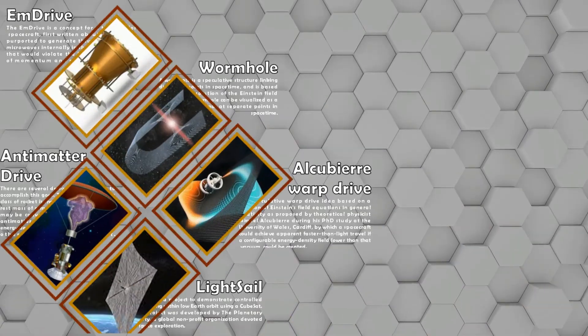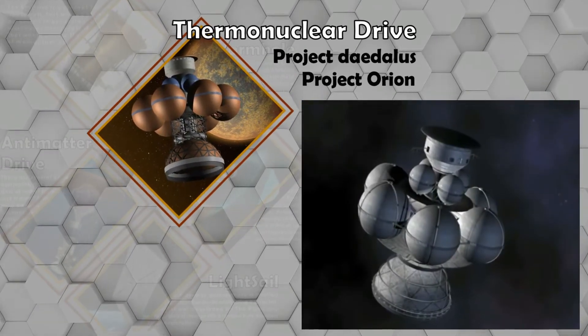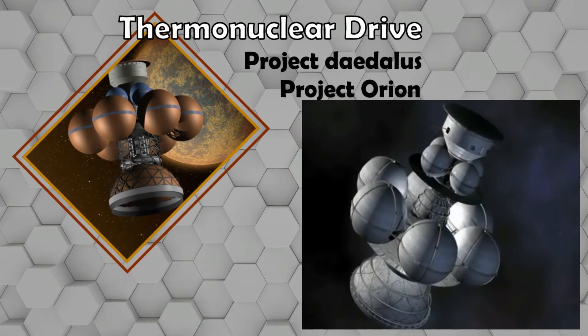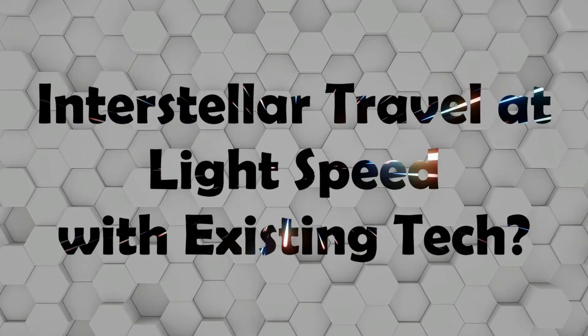So we have discussed lot of ways to get to stars. And thermonuclear drive is the only one that can be built in time and take humans to Proxima b by 2100s. But remember in start we mentioned an existing tech which can enable us to travel at speed of light.